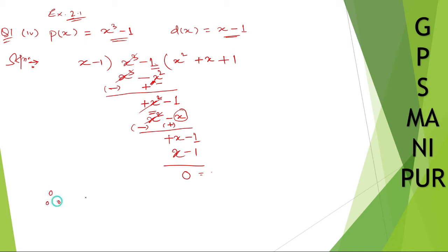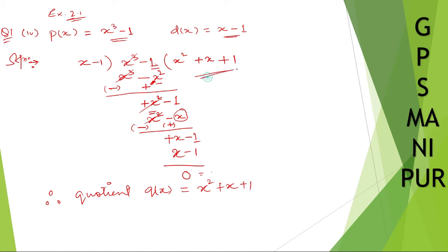Therefore, Q of x is equal to x square plus x plus 1 — this is the quotient. And remainder R is equal to 0.